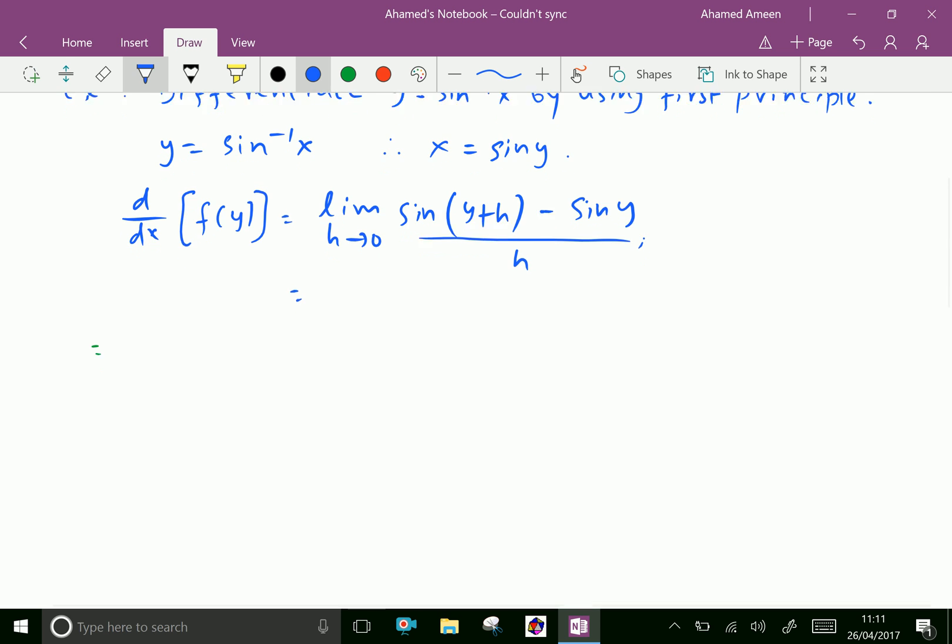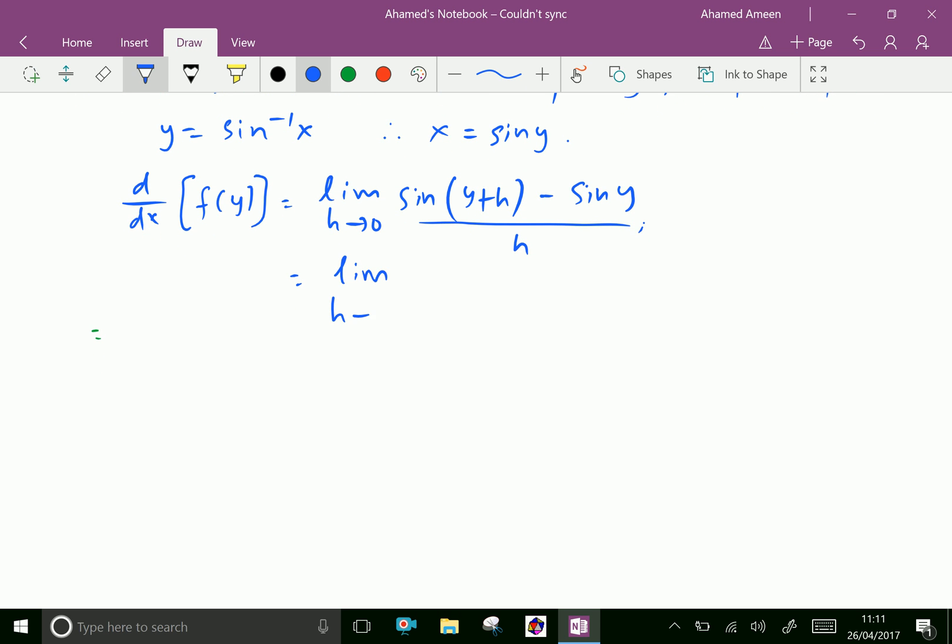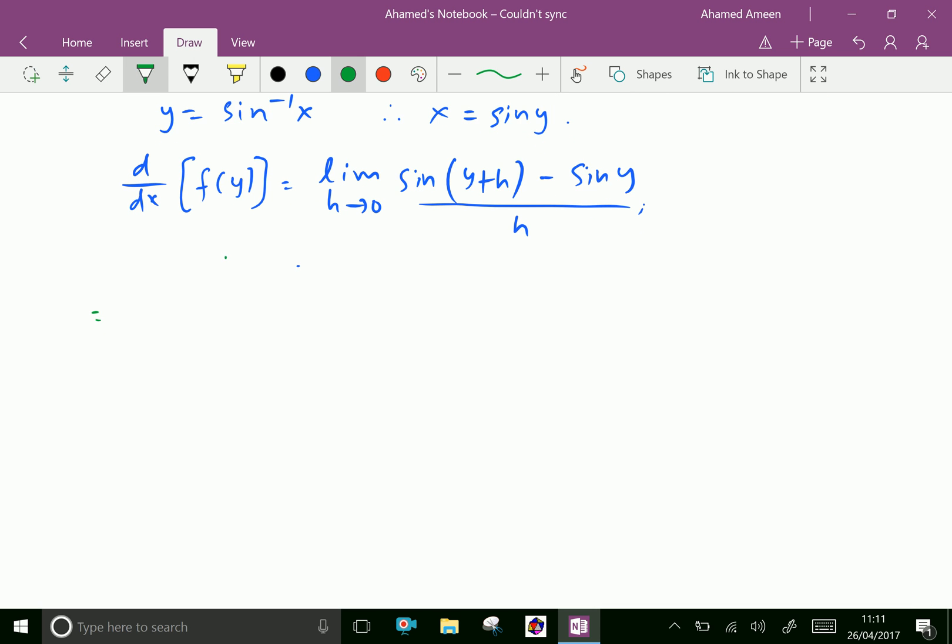Limit h tends to 0, sine c minus sine d. Before that, write now sine c minus sine d equals 2 cos of c plus d over 2 times sine of c minus d over 2.